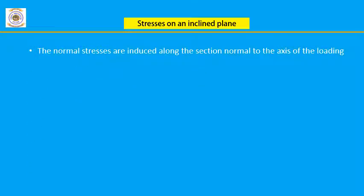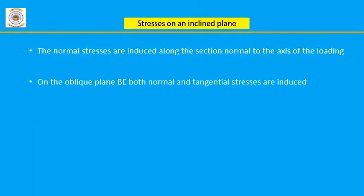Next: stresses on an inclined plane or oblique plane. To find the stresses acting on an inclined plane in a stressed material, we consider a general plane inclined at an angle θ to the normal plane in an element, and we find normal and tangential stresses — tangential stress being the shear stress. On the oblique plane, both normal and tangential stresses are induced.